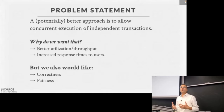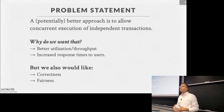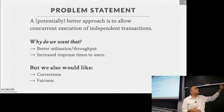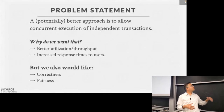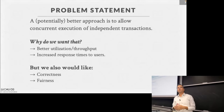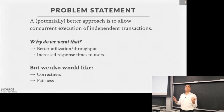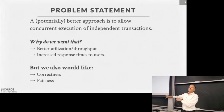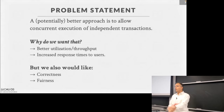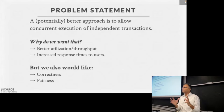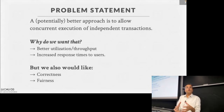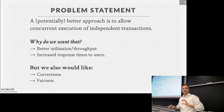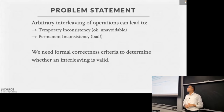We really want to do this at scale — thousands, tens of thousands, if not millions or billions of transactions at a time. We want better utilization of database hardware, higher throughput, better response times, and correctness. In many cases, you also want fairness — if multiple transactions come at the same time, you want all of them to be given an equal chance to complete. Some systems may have priorities, but the mechanism of fairness should be built in.